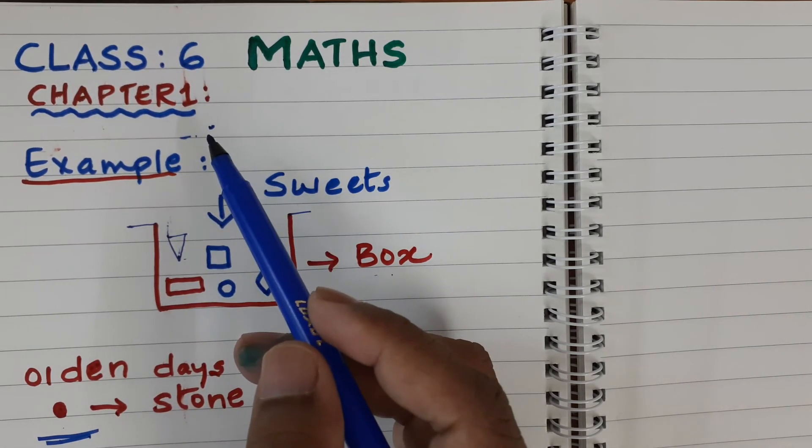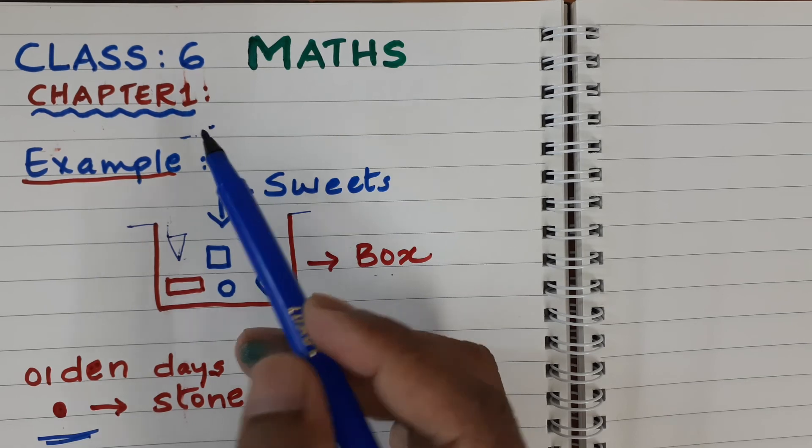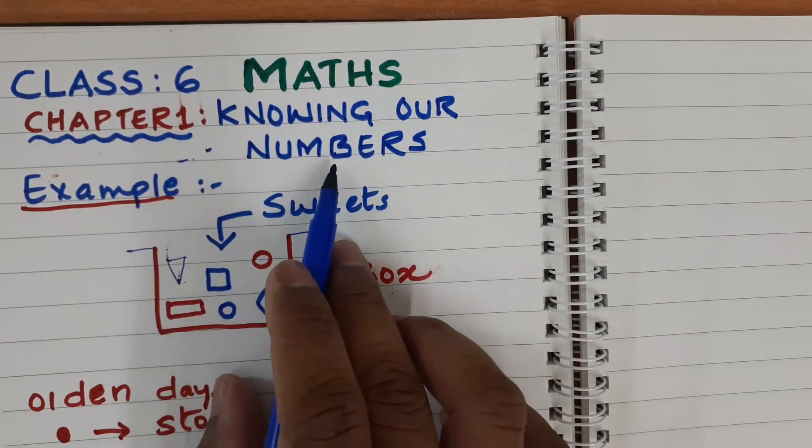The chapter name is Knowing Our Numbers. Class 6, Chapter 1, Knowing Our Numbers.